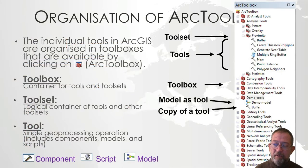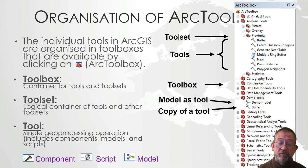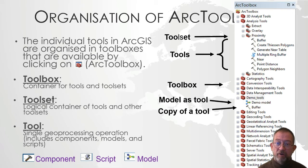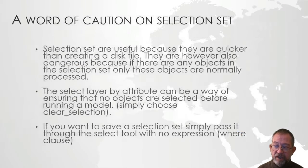Depending on if you installed everything or not, there will be around 19 different toolboxes. The idea is to think of it like toolboxes at home — I have one toolbox for my power tools and one for my manual tools. In this case there is one toolbox for doing conversion, one for vector analysis, one for raster analysis, one for management-related things, and so on.